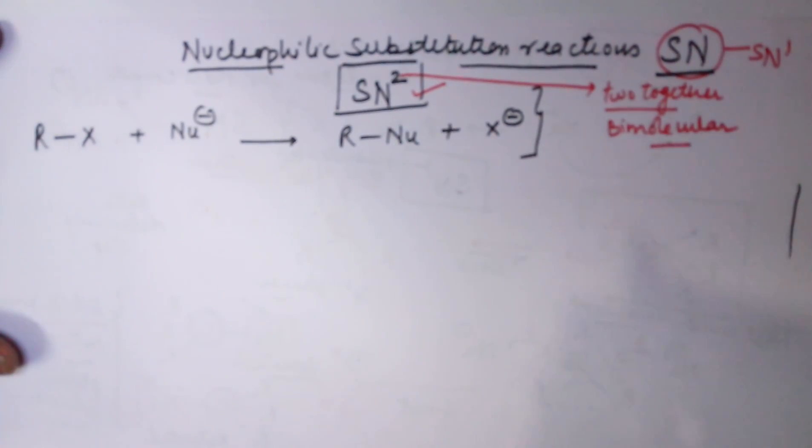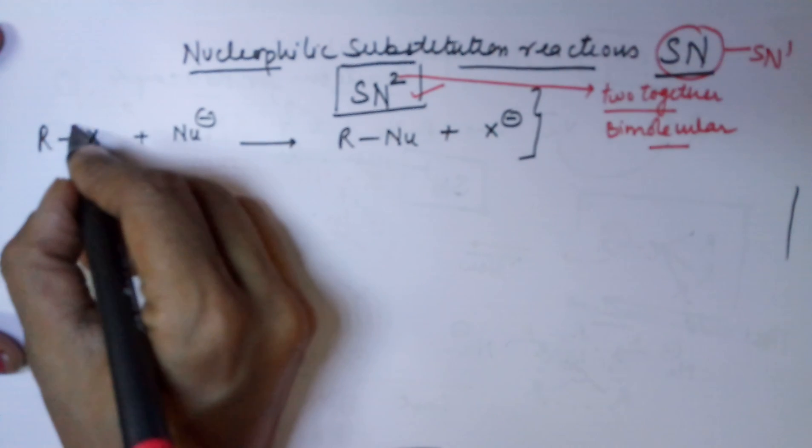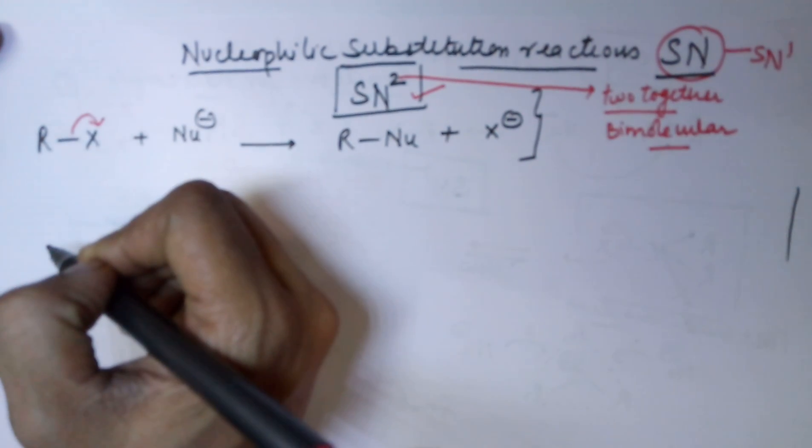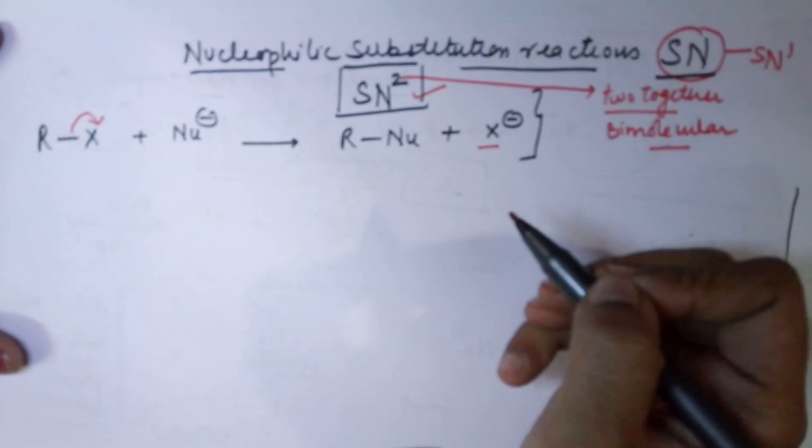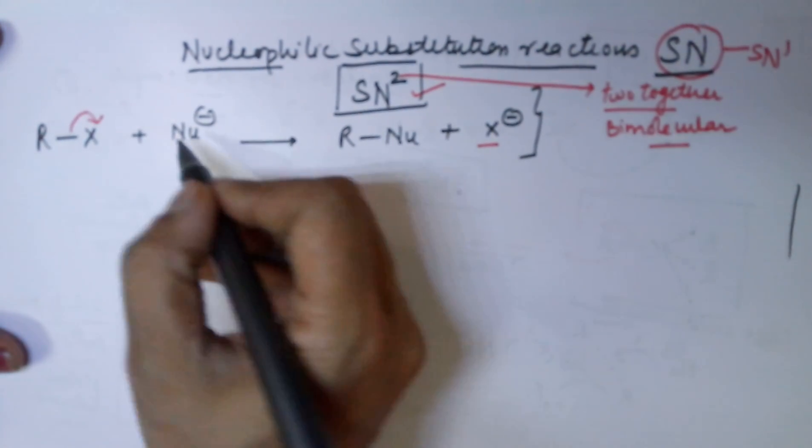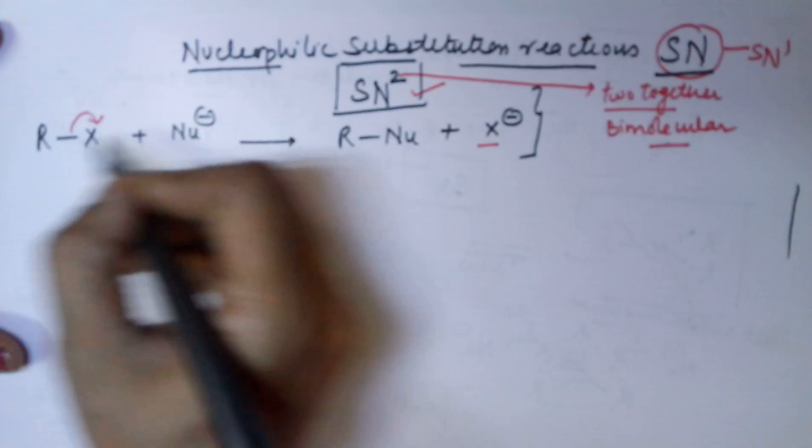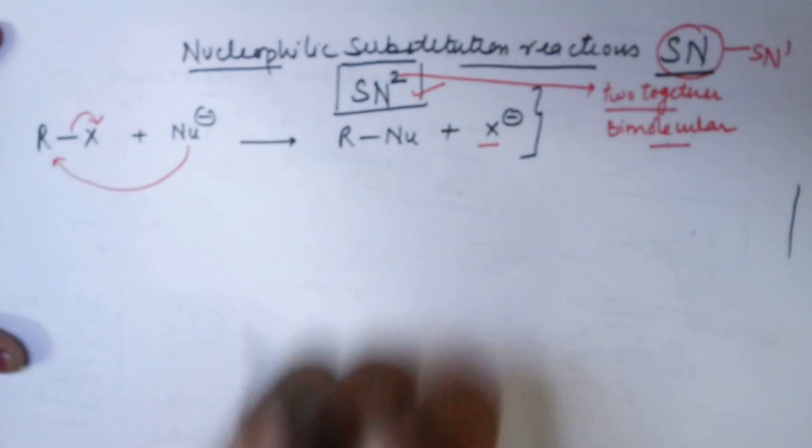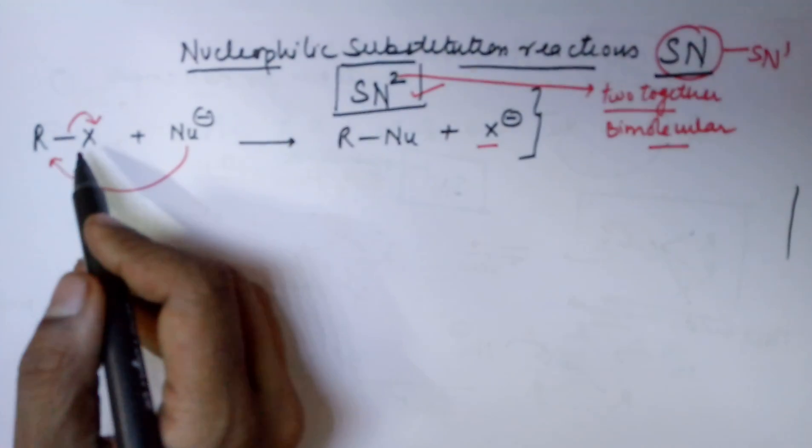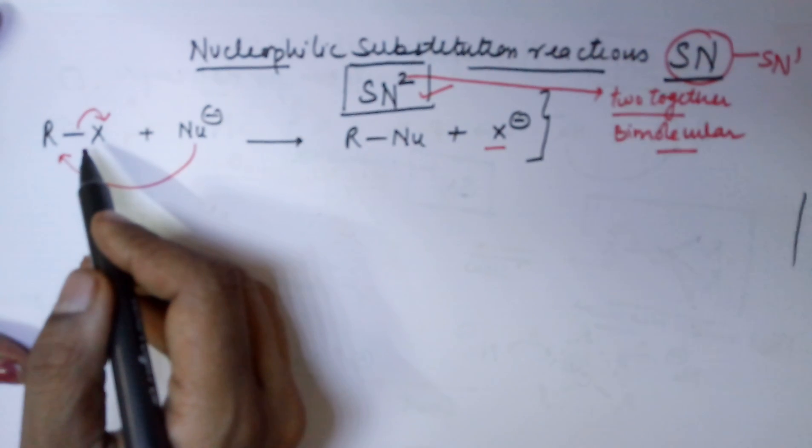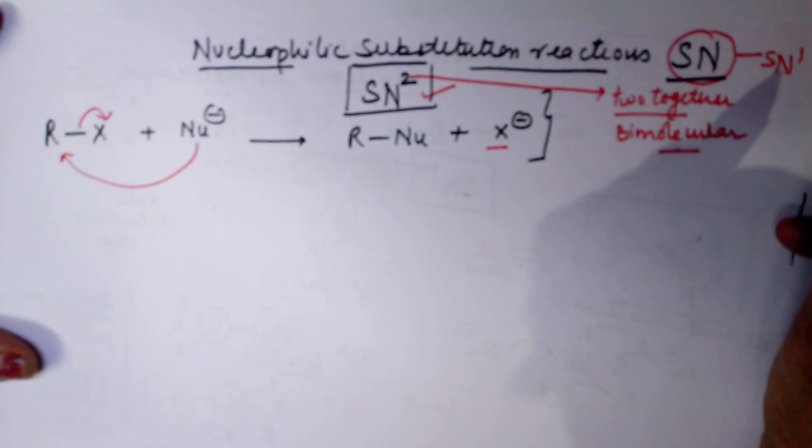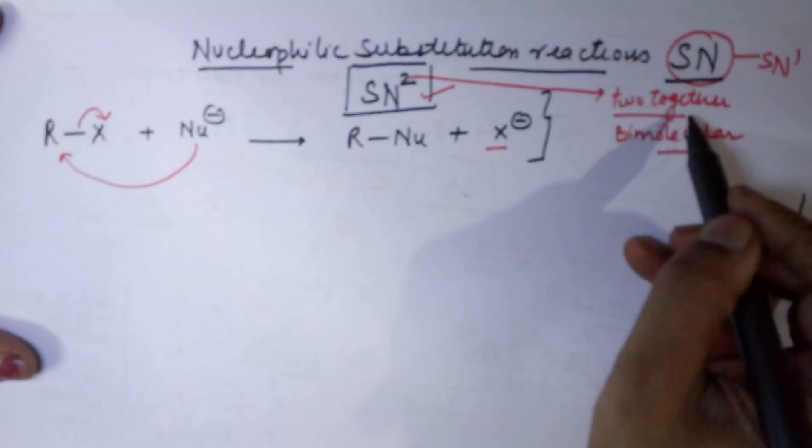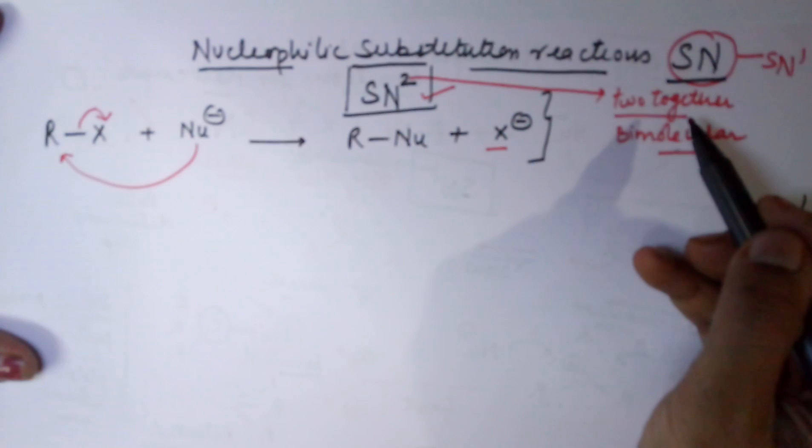Whenever you have a nucleophilic substitution reaction, X, the halogen, being more electronegative, takes the electron pair with itself and goes off as X- while the nucleophile attacks. So actually, there are two steps happening in this reaction. First, X- leaves and second, nucleophile attacks. In SN1, these two steps happened one after the other. Whereas in SN2, it's two together. Both these steps will happen simultaneously.